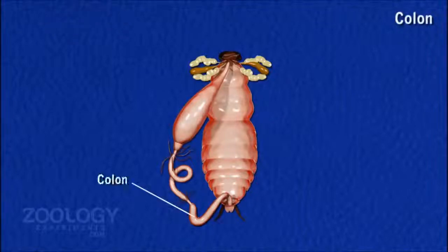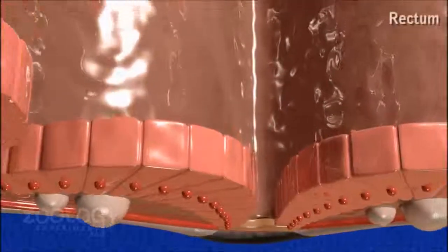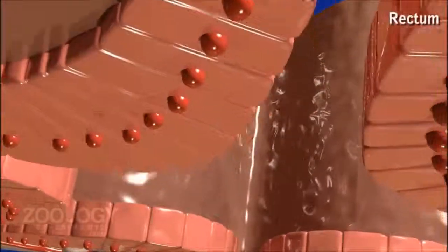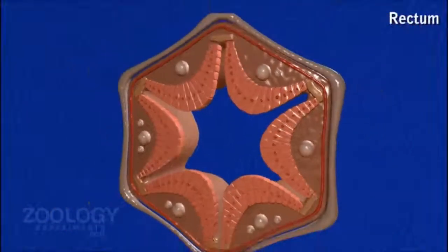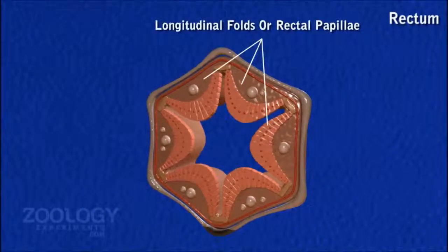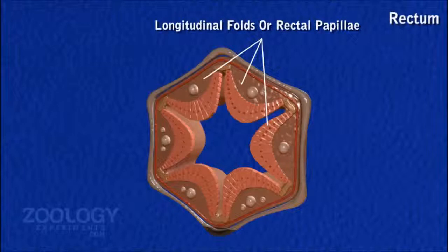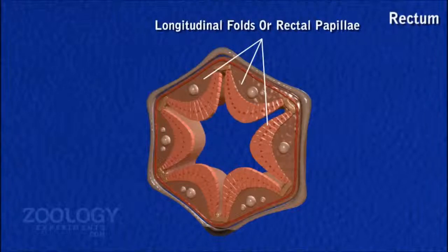Colon: The colon is long, wide, thin and irregular in shape. Rectum: The rectum is an oval or spindle-shaped sac with external ridges alternating with internal longitudinal thickenings called rectal pits. These are six in number and also known as rectal glands. The rectum opens to the outside by the anus.